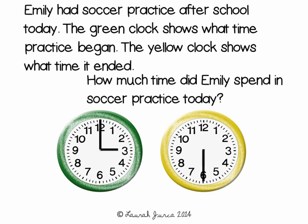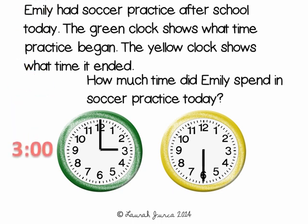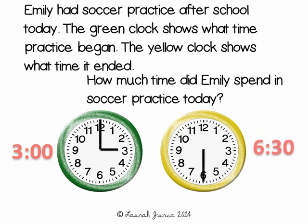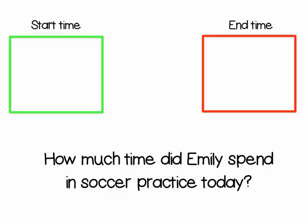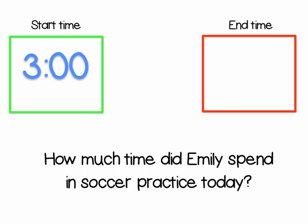The green clock shows the start time — practice began at 3 o'clock. The yellow clock shows what time practice ended: 6:30. So our start time is 3 o'clock and our end time is 6:30.